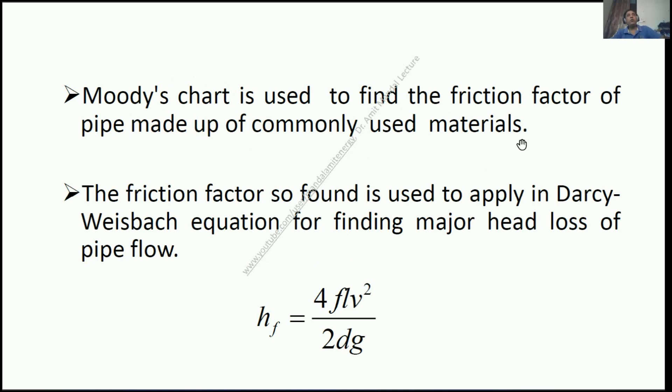You might be knowing about the losses in pipe flow - major head loss and minor head loss. In case you don't know that, then you must check out my lecture first which is made for losses in pipe flow. Right now I believe that you know what is major head loss in pipe flow. Major head loss occurs due to the action of friction of the inner wall of pipe on the flow of fluid. It is given by the Darcy-Weisbach equation.